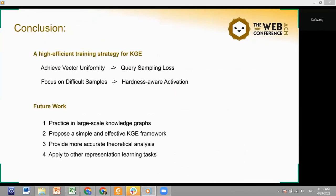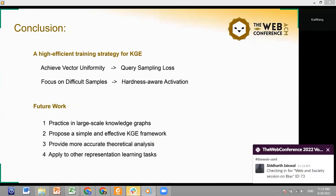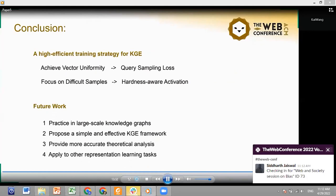In summary, we propose a high-efficient training strategy for KGE models to replace negative sampling. By combining the newest findings in contrastive learning and recent KGE research, we designed a query sampling loss and a hardness-aware activation function. The experimental results on five different datasets prove the effectiveness of our training strategy.